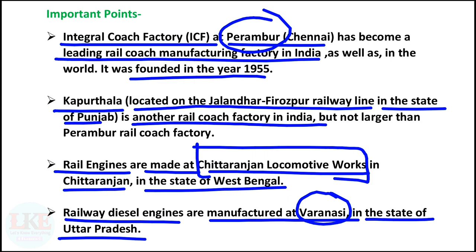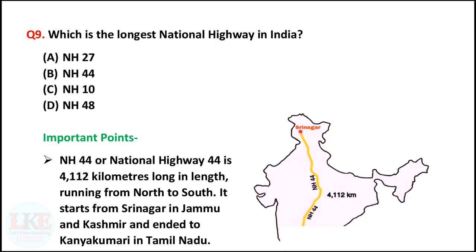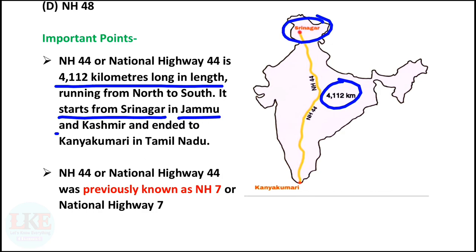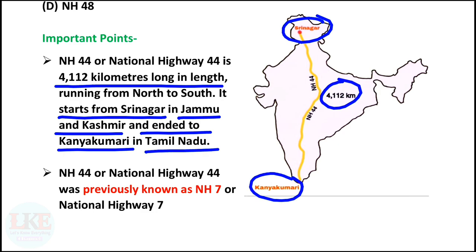I hope all the points have been cleared to you. Question number 9: which is the longest national highway in India? Right answer option B: NH44. NH44 or National Highway 44 is 4,112 km long, running from north to south. It starts from Srinagar in Jammu and Kashmir and ends at Kanyakumari in Tamil Nadu. For your information, NH44 was previously known as NH7 or National Highway 7.